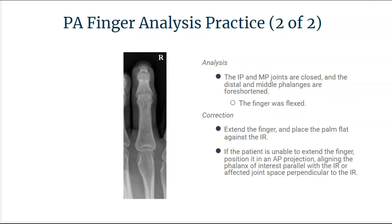In our second practice analysis, you can see that we have some distal phalanx foreshortening and some middle phalanx foreshortening. This is a result of the finger being flexed. What we need to do is extend that finger and place that palm flat against the IR to get a true PA finger projection.